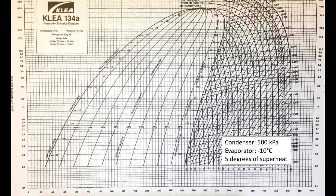Here's a sample pressure-enthalpy diagram we can use to draw a refrigeration diagram. We have pressure on the y-axis in kilopascals and enthalpy on the x-axis in kilojoules per kilogram. On this chart, we are going to draw the four parts of our refrigeration cycle: the compressor, condenser, expansion valve, and evaporator. When we get done, we're going to have something that is pretty trapezoidal looking.